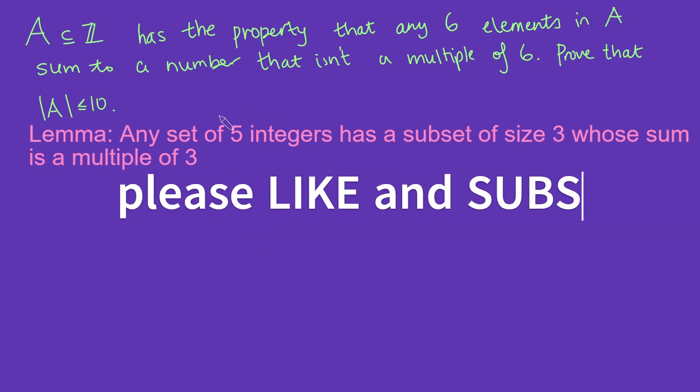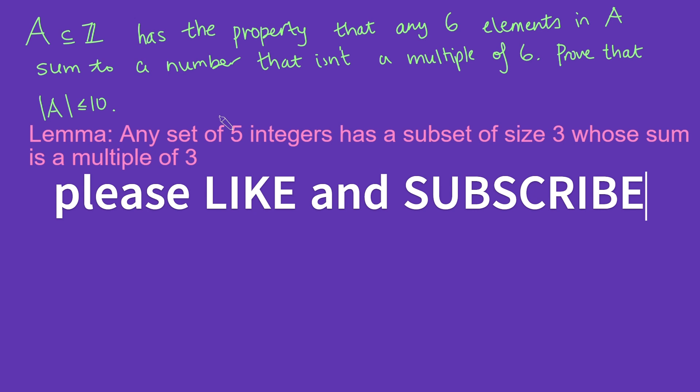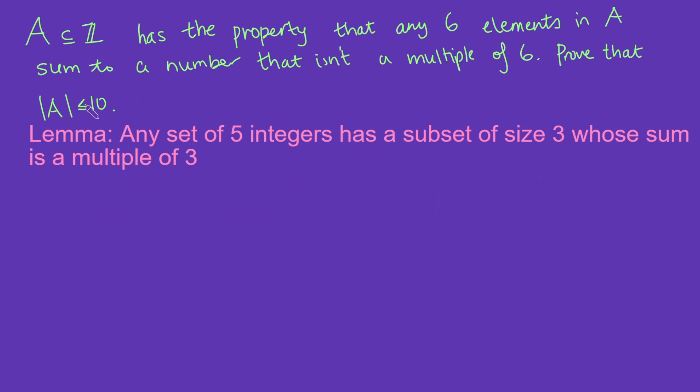So going back to the original problem here with the set A, what we're going to do is prove this by contradiction. So we're going to assume for contradiction that A has at least 11 elements. What I'm going to do is just label the elements A1, A2, all the way up to AN. Let's say I'm assuming that N is at least 11. And what we're going to do is take the first five elements, so A1 up to A5, and we're going to apply this lemma on those five elements. And then that tells us that there's got to be a subset of those five, A1 up to A5. There's a subset of this of size three whose sum is a multiple of three. Without loss of generality, let's just assume that those elements are A1, A2, and A3.